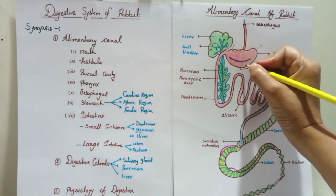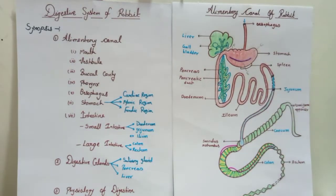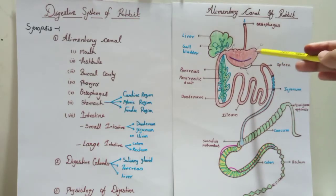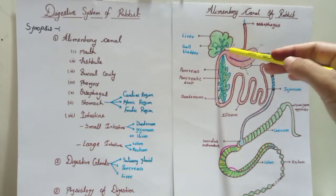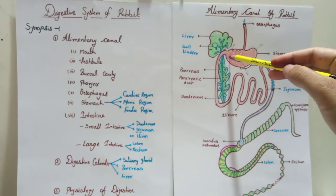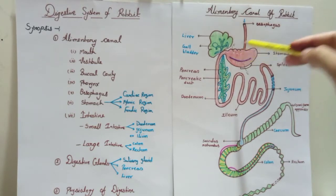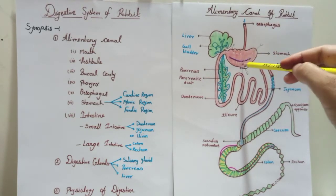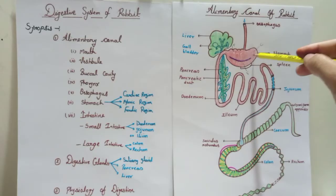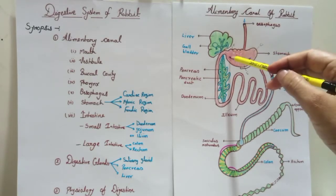The cardiac region is the anterior part of the stomach and has a cardiac valve. The pyloric region is the posterior part and has a pyloric valve. In between the cardiac and pyloric regions is the fundic region. So in the stomach there are two valves — cardiac valve and pyloric valve — to prevent the backward flow of food.